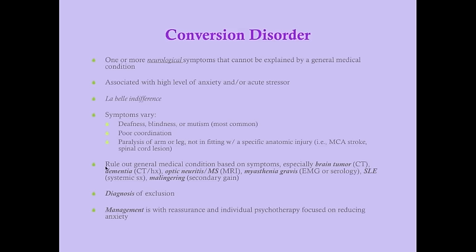To arrive at a diagnosis of conversion disorder, you need to rule out general medical conditions based on symptoms. Things to rule out include a brain tumor (CT scan), dementia (CT and history), optic neuritis and multiple sclerosis (MRI if needed), myasthenia gravis (EMG or serology), lupus (systemic symptoms), and malingering (check for secondary gain in the history). Because conversion disorder has such a wide variety of presentations, you need to base the workup on clinical judgment and the individual patient. This is a diagnosis of exclusion, and management is with reassurance and individual psychotherapy focused on reducing anxiety.